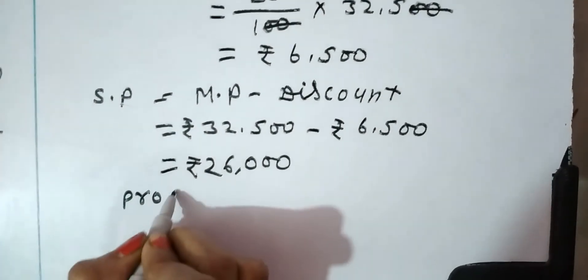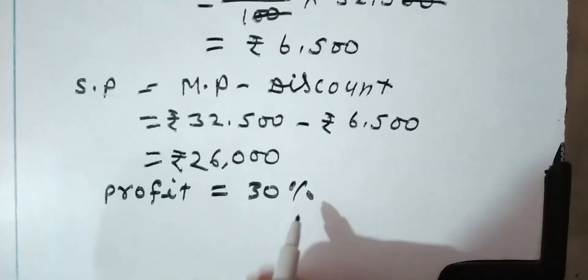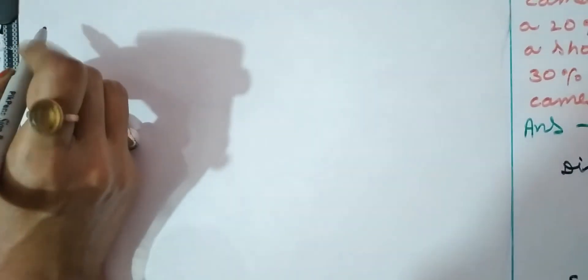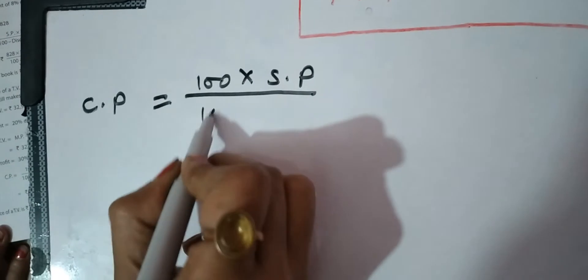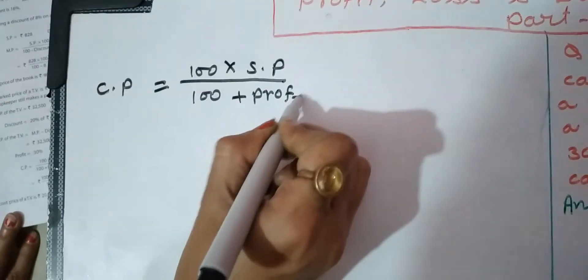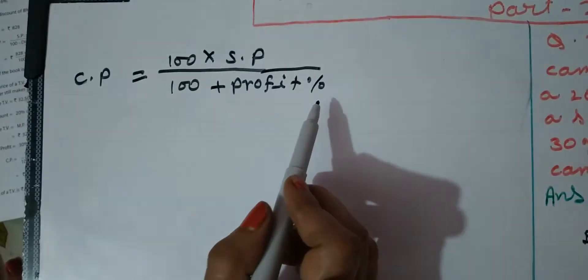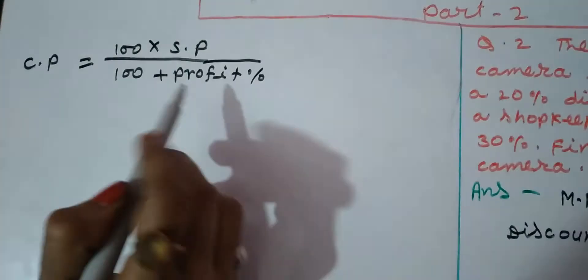Now, Profit given in the question is 30%. As I told you in the last video, the cost price formula is: CP = (100 × SP) ÷ (100 + Profit%). Profit percentage is given and selling price has just been calculated, so we apply this formula.